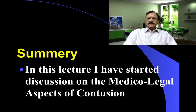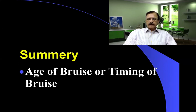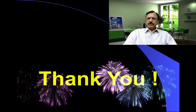The summary of this lecture: we have started discussion on the medical-legal aspects of contusion. The most important aspects are the timing and age of the bruise, then differential diagnosis, ante-mortem and post-mortem nature, defense injuries, and artificial bruises — all of which I will discuss in the next coming lectures. Today we learned about the timing of the bruise: naked eye appearance depending on color changes from hemoglobin conversion through to bilirubin, and microscopic appearance through detection of pigments under the microscope.